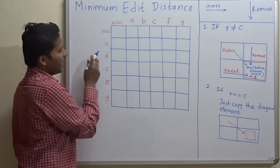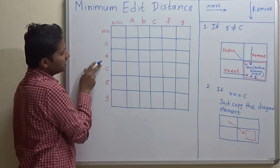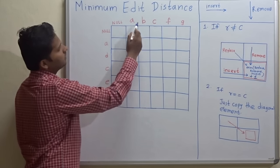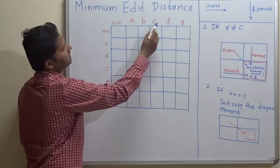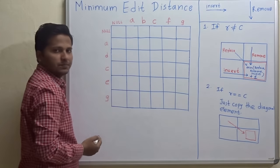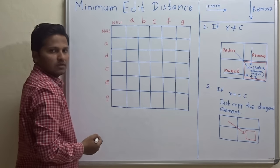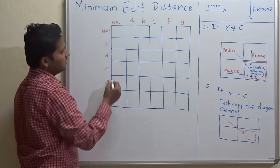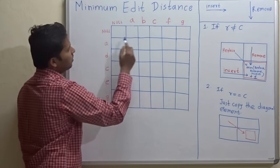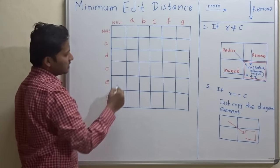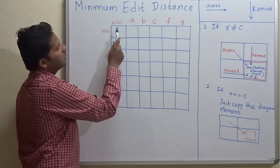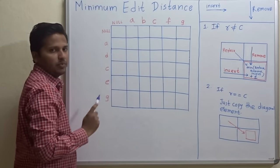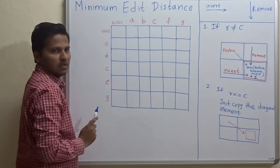We have to convert A, D, C, E, G into A, B, C, F, G. For the base condition, the first row and the first column contain the null string operations.